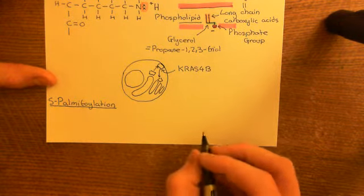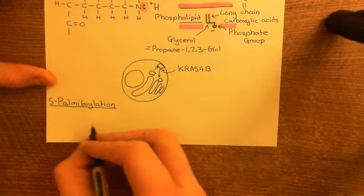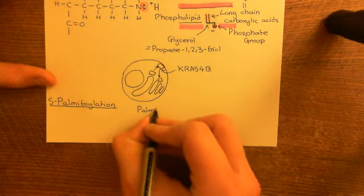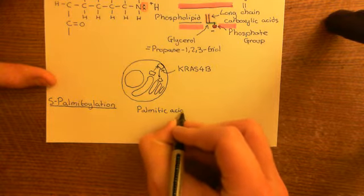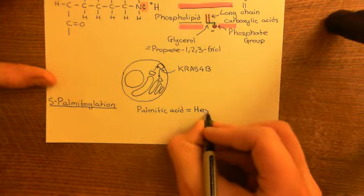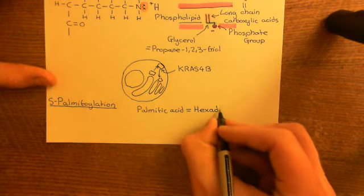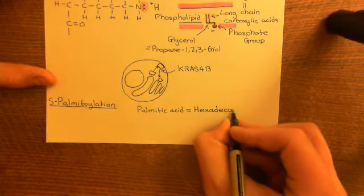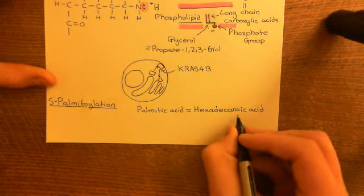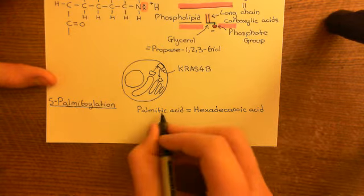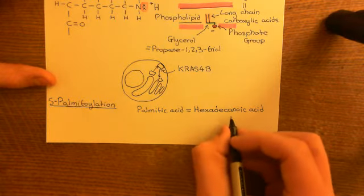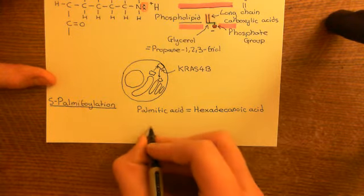Let's start with the structure of palmitic acid. Palmitic acid is the old biochemist's name for a molecule that chemists now call hexadecanoic acid. This name is more useful because it tells you exactly what it is — a 16-carbon, fully saturated carboxylic acid.